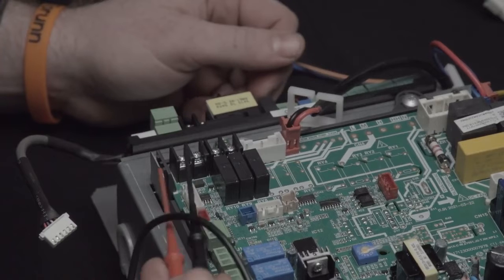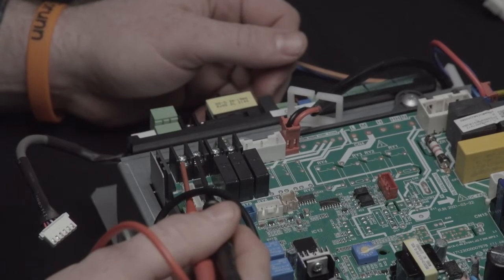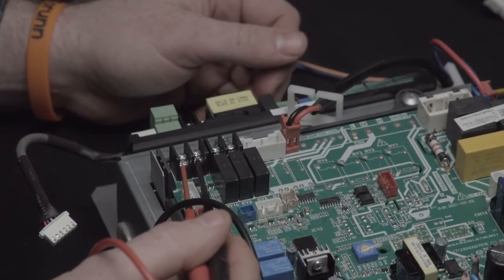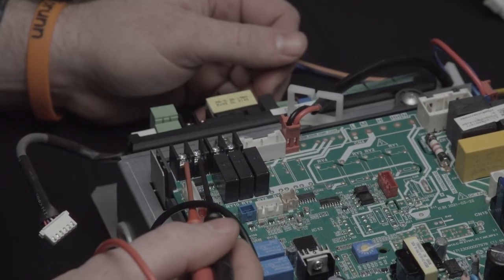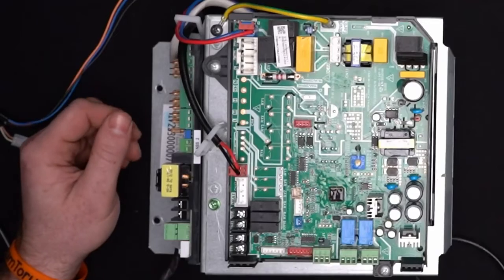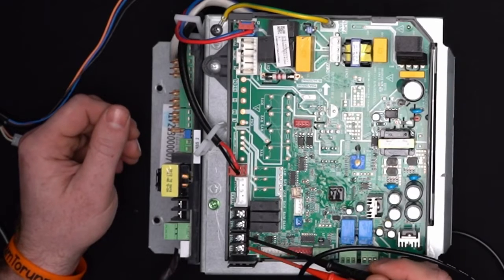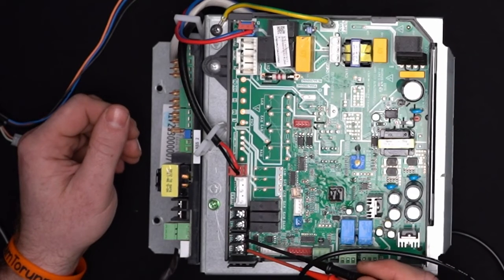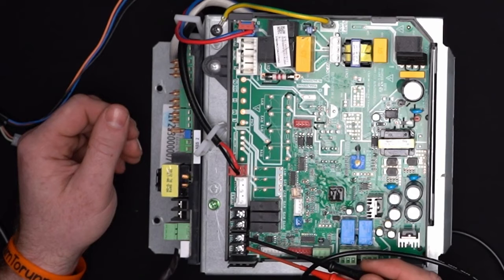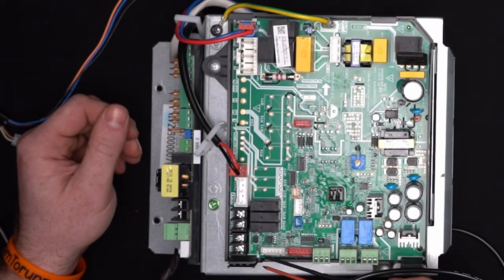S1 is right here on the bottom. You can see it's CN20, and S2 is right next to it, and it is CN43. If you're using the DC communication, you want to make sure to wire to S1, S2, and do not wire 24 volts AC or low voltage to the S1, S2 terminals. If you do that, you can damage the board.